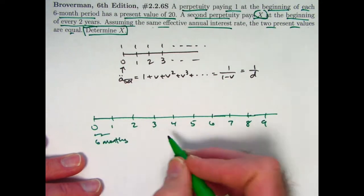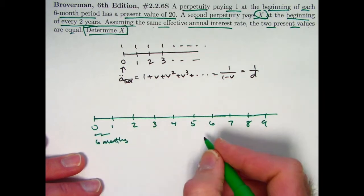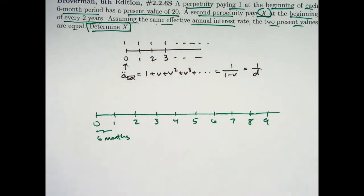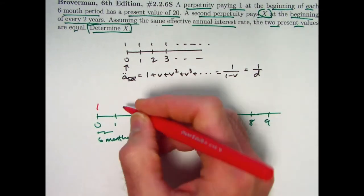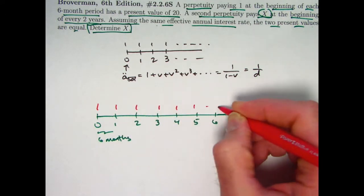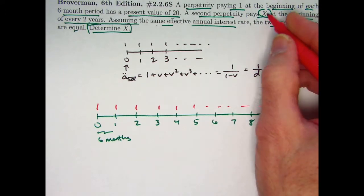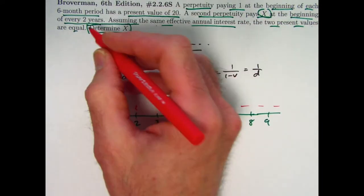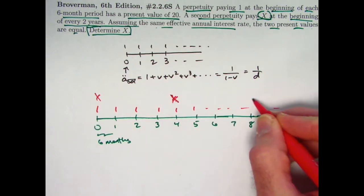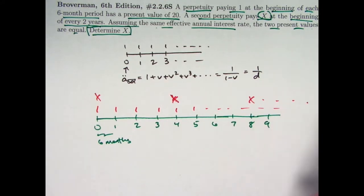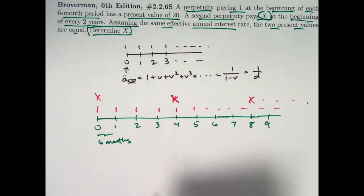So 1 is six months after time 0, 2 is 12 months after time 0 which is one year of course, etc. The first perpetuity, the first option, is paying 1 starting at time 0 and going on forever. The second one pays x at the beginning of every two years, so that would be at time 0 and then at time 4 and then at time 8, etc. These again are six-month periods, so four of them are two-year periods.